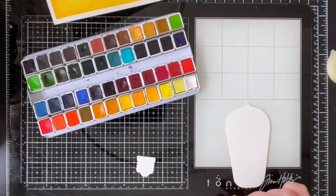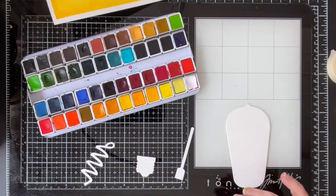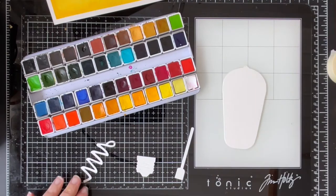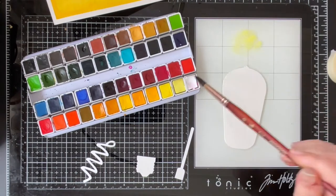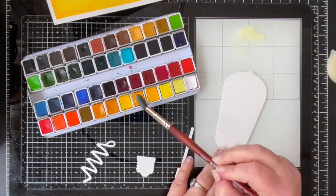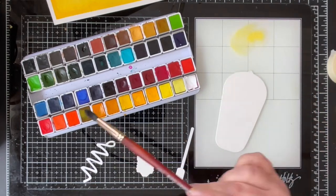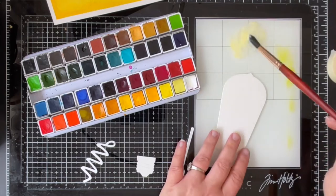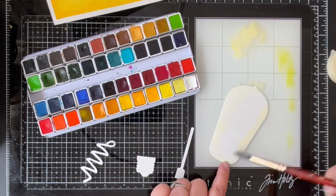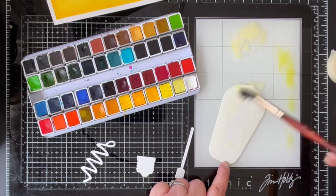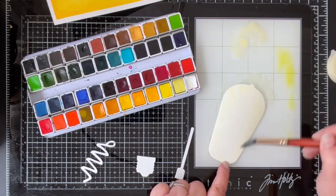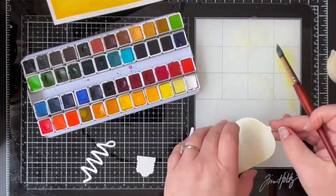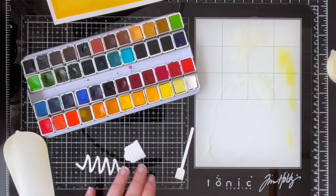The lightbulb itself is created from a Tim Holtz die. I will put the description for all of the different supplies I'm using below. But I also wanted to give the lightbulb just a little bit of color to it. Lightbulbs are clear, but I wanted to give a little bit of dimension.